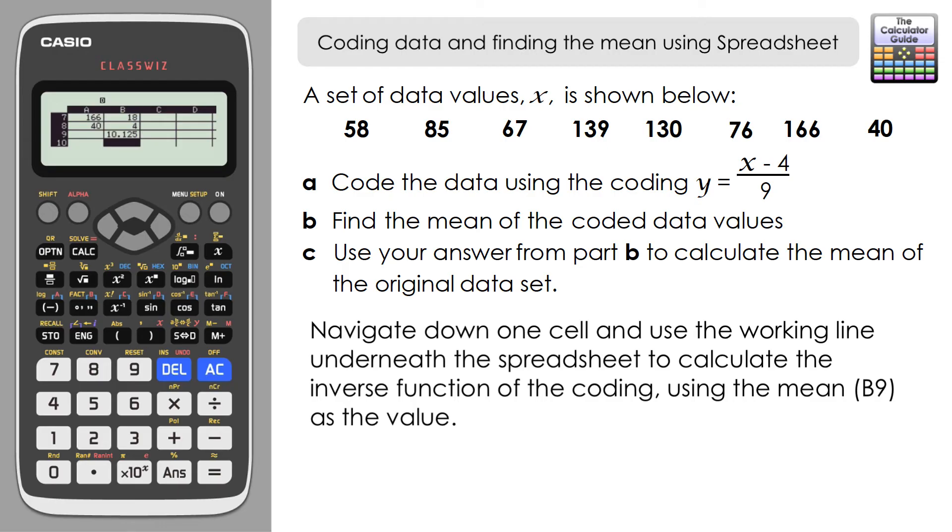Underneath the spreadsheet is basically a single line working space. It's a bit like the line mode when you're operating in calculate mode. I'm going to use this to do what I've just said. So multiply our coded mean by nine. That's nine times cell B9, which is the location of our coded mean, and then add four to that.